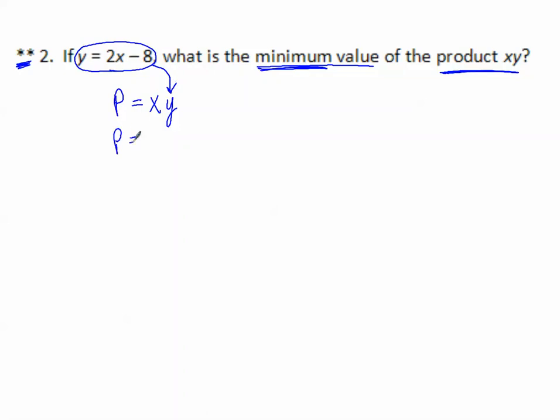I'm going to plug that in and get x times (2x minus 8). Let's simplify this: 2x squared minus 8x. Now if you look at this function, you know this is a parabola opening up, so there has to be a minimum value. Let's find the derivative to get critical numbers: 4x minus 8. Set this equal to 0, and it looks like x equals 2.